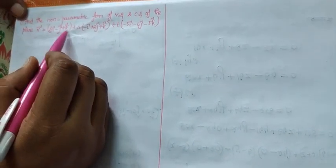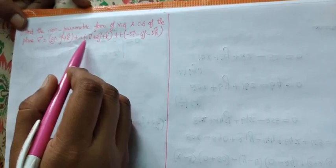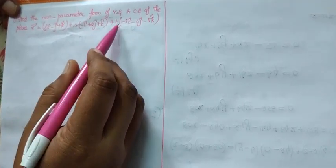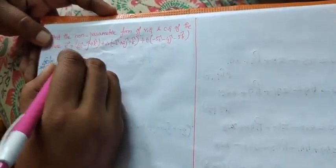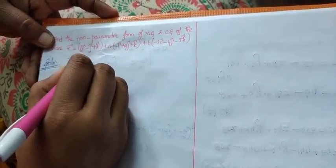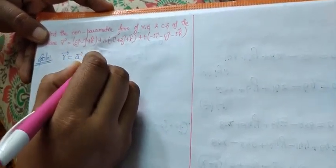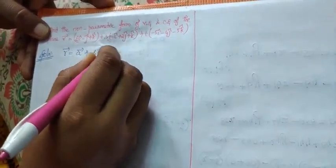7th problem. Find the non-parametric form of vector equation and the Cartesian equation of a plane, given r vector equal to 6i minus j plus k plus s into one vector plus t into another vector. I have written all the vector equation form. That is in the same format: r vector equal to a vector plus s·u vector plus t·v vector.